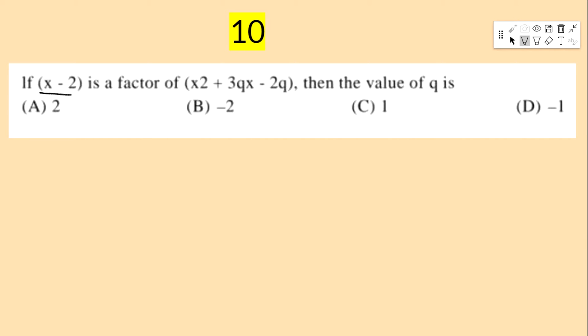Next bit: if x − 2 is a factor of x² + 3qx − 2q, then the value of q is — options: 2, −2, 1, −1.